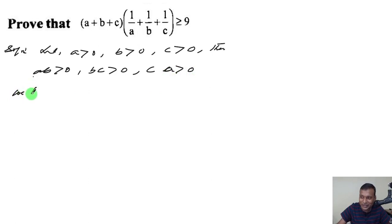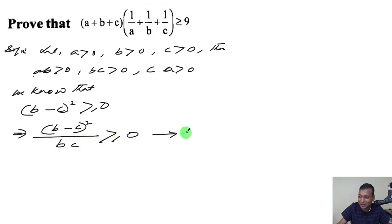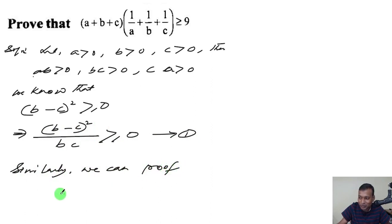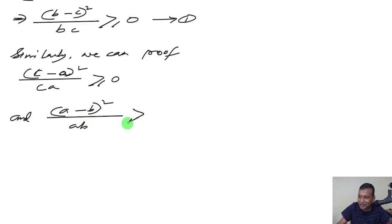We know that (b - c)² ≥ 0, which implies (b - c)²/bc ≥ 0 — let this be equation 1. Similarly, (c - a)²/ca ≥ 0 — equation 2 — and (a - b)²/ab ≥ 0 — equation 3.